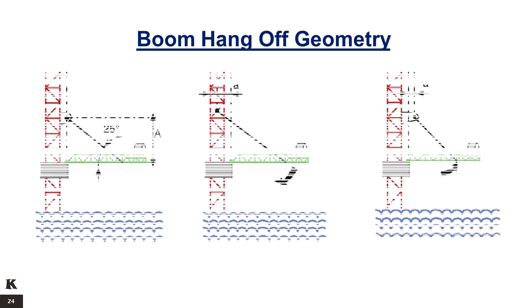Boom Hang-off Geometry. In order to achieve a safe and correct hang-off, the distance A on the first picture should be at least equal to 22 feet or 7.5 meters, the angle should be at least equal to 25 degrees, and the upper attachment point must be in line vertically with the base plate. On the second and third picture, the upper attachment point is not in line vertically with the base plate, which creates a risk for the boom assembly to fall.